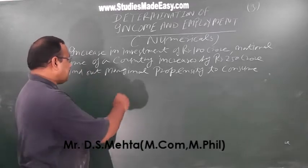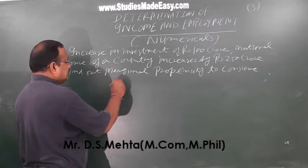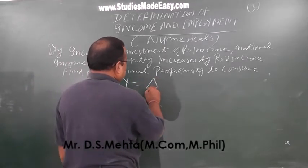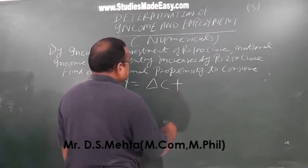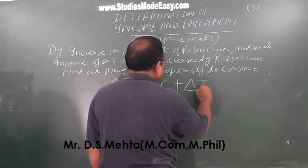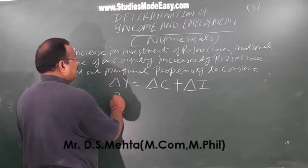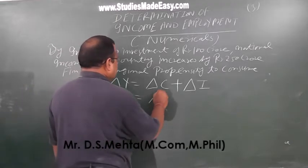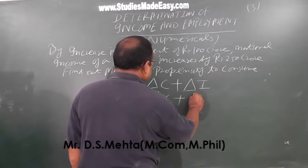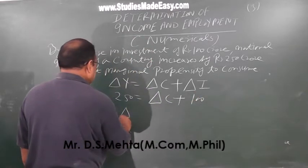तो इसका formula हम देखते हैं। Change in national income: Delta Y is equal to Delta C (change in consumption) plus change in investment. Change in income है हमारा 250 crore, और Delta C find out करना है, और Delta I है हमारा 100 crore।